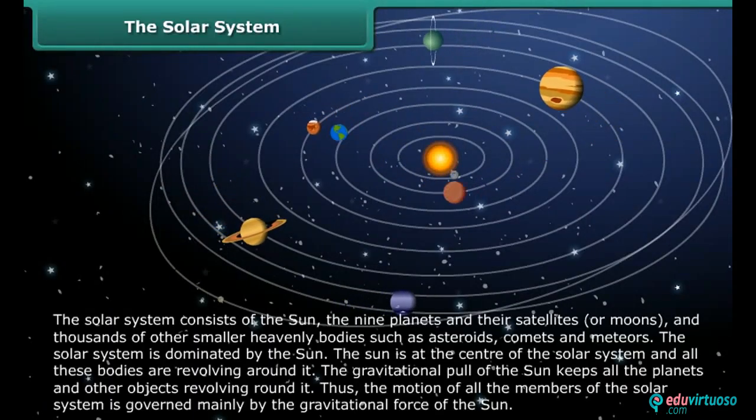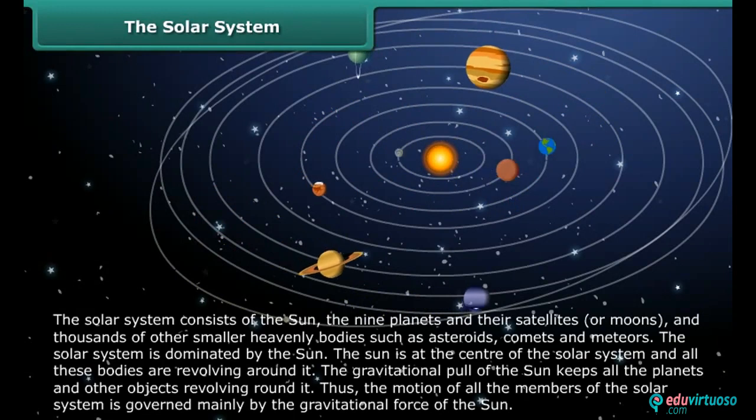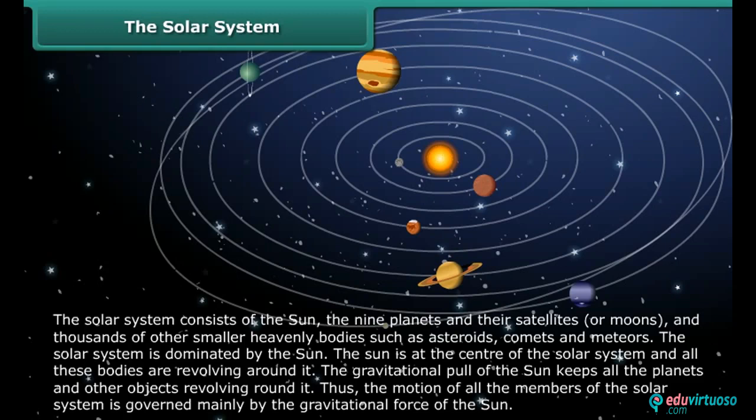The solar system consists of the sun, the nine planets and their satellites or moons, and thousands of other smaller heavenly bodies such as asteroids, comets, and meteors. The solar system is dominated by the sun. The sun is at the center of the solar system and all these bodies are revolving around it. The gravitational pull of the sun keeps all the planets and other objects revolving around it. Thus the motion of all the members of the solar system is governed mainly by the gravitational force of the sun.